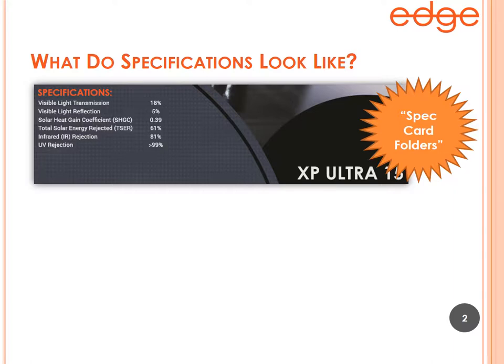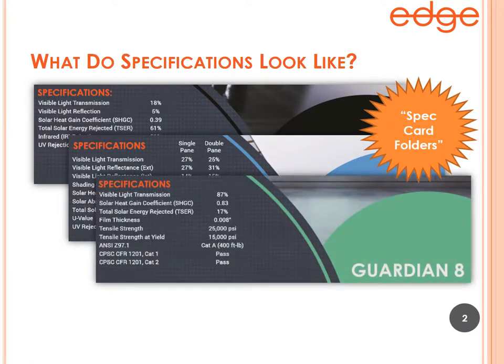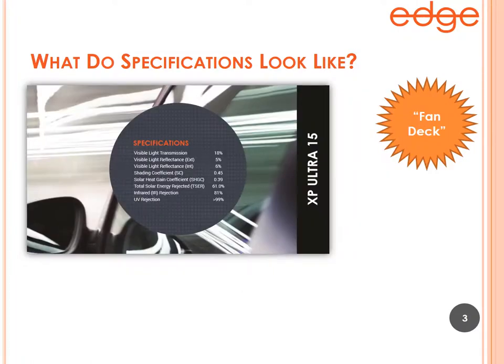The first example is an automotive film, which has six lines of specification. The next one is a solar control film — you'll notice that the specifications toward the end of the list are different, and there's a second column of data for double pane windows, which is unique to solar films. The third example is a safety film specification card folder, where items toward the bottom again differ from the previous two.